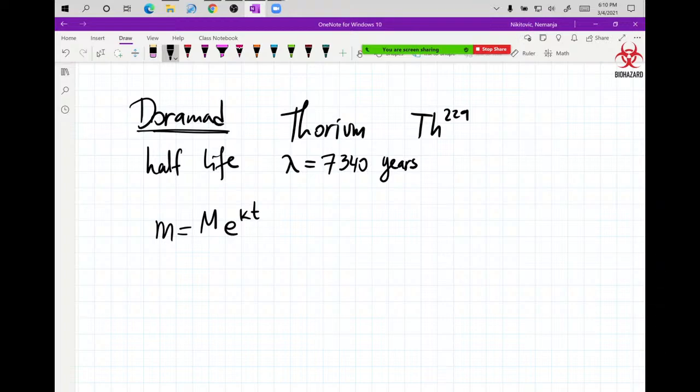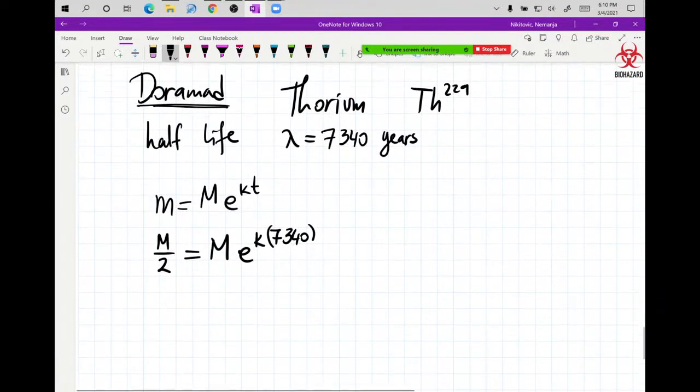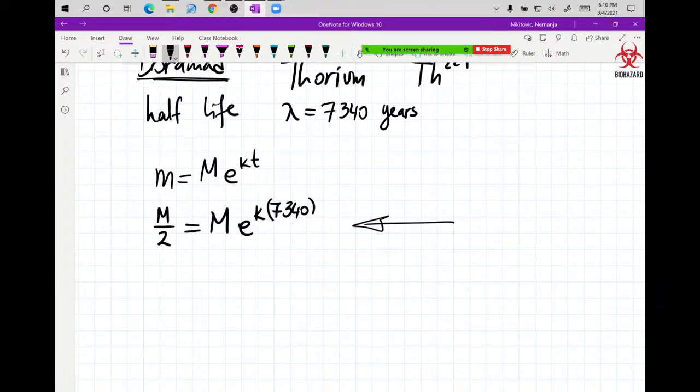So I have some amount M, which is initial amount. Some people brushed more, some people brushed less. So we're just going to call whatever amount they used, that's going to be capital M. E to the K to the 7,340 years. And what happens in this time? Your original mass of what you used gets cut in half. So that's the definition of the half-life.